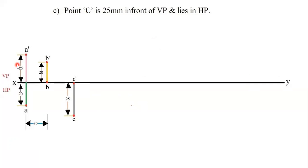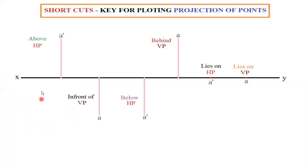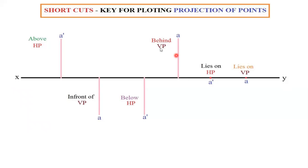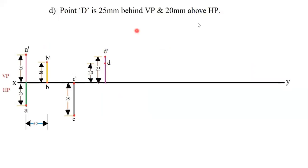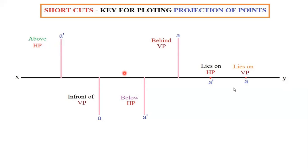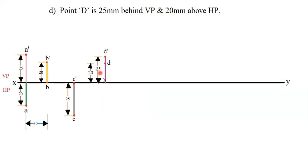Dimensioning I will explain at the end. This XY line is the reference line for first angle projection — we have VP (vertical plane) above and HP (horizontal plane) below, getting the front view on the vertical plane and top view on the horizontal plane. Next is point D. Point D is 25 mm behind VP and 20 mm above HP. Behind VP means you mark above the XY line, and 20 mm above HP is also above the XY line. So mark both points above: D dash at 25 mm and D at 20 mm above.